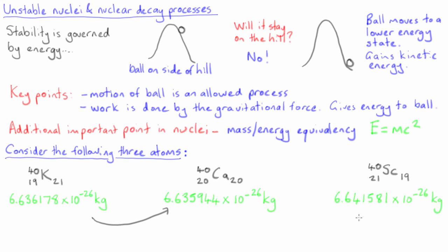Similarly, there could be an allowed physical process that converts scandium-40 into calcium-40, lowering the energy of the system. Note that the total energy still has to be conserved, so such a process must emit something that carries away the loss in nuclear energy, similar to the ball on a hill that ends up with kinetic energy.